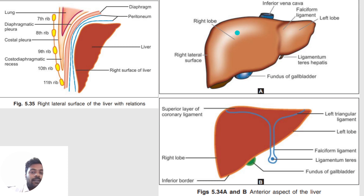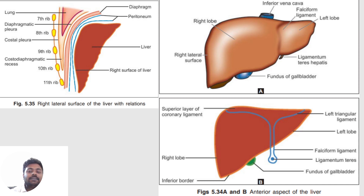Relations of the anterior surface: the right part is related to the right costal margin, diaphragm, sixth to tenth ribs, and the lower margin of the right lung. The left part of the anterior surface is related to the left costal margin, the diaphragm, and the seventh and eighth left costal spaces and cartilages.